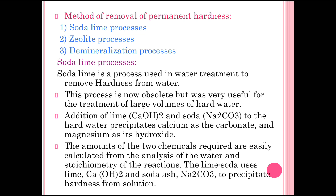This process is now obsolete but was very useful for the treatment of large volumes of hard water. Lime means calcium hydroxide (Ca(OH)₂) and soda means Na₂CO₃. When lime and soda are added to hard water, they precipitate calcium as carbonate and magnesium as hydroxide. The amounts of the two chemicals required are easily calculated from the analysis of water and stoichiometry of the reaction.